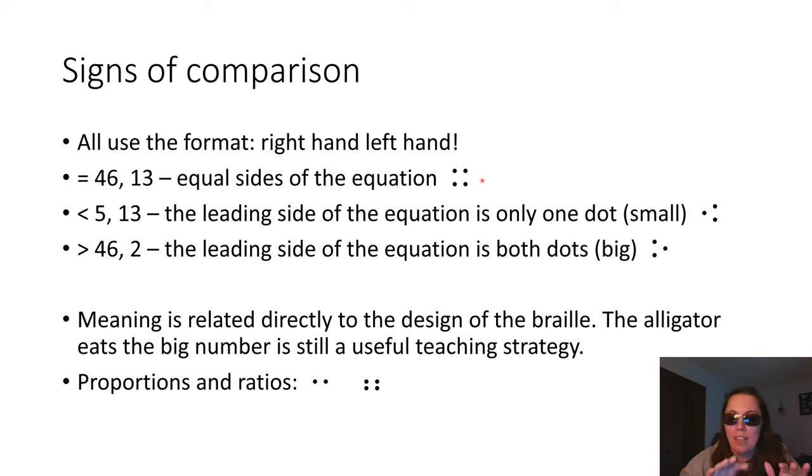Then if we have a less than sign, the leading side of that equation would only be one dot. So we'd start on our right hand with just a dot 5, and then on our left hand with the dots 1, 3. Of course, if you grew up in a culture that says the alligator eats the big number, here we put the little dot on the little number side and the big open mouth dot on the open mouth side.